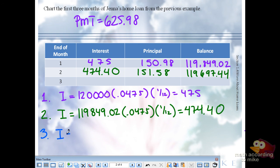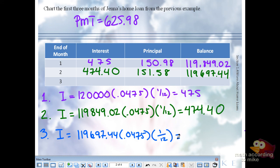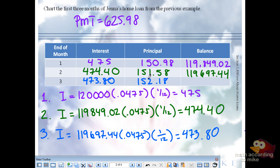So we're going to take the new $119,697.44 number, multiply it by the same interest rate and same period. So $473.80 from the $625.98 payment — I can do this part, maybe. $152.18 — thank you! 60 cents every month, bonus! That's not even a pack of gum.